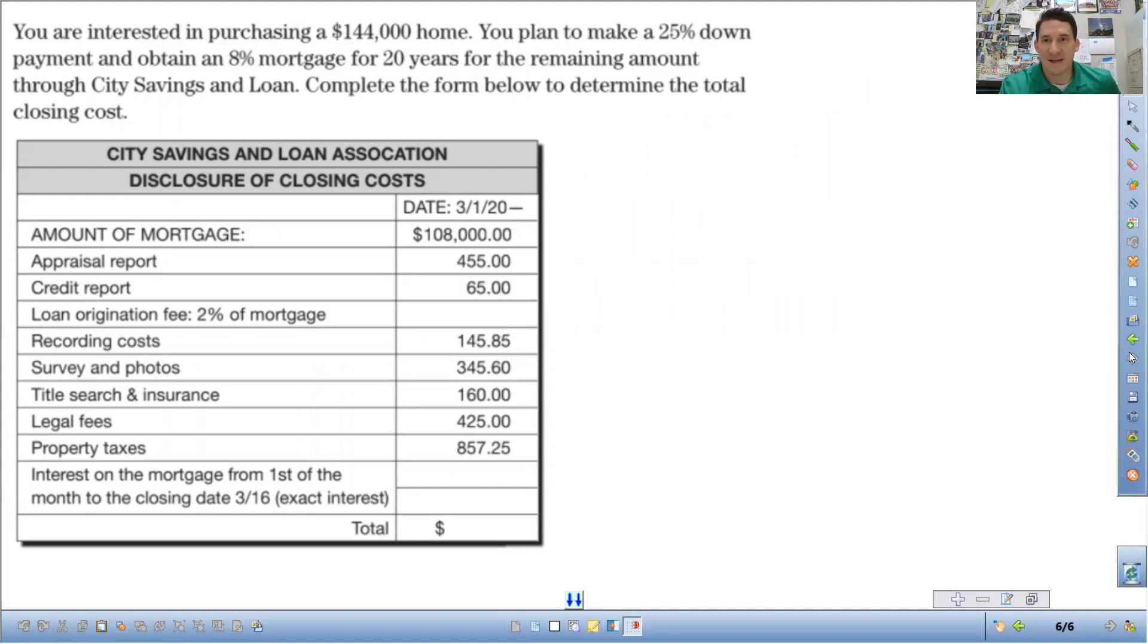You plan to make a 25% down payment and obtain an 8% mortgage for 20 years. By the way, 8% is a terrible mortgage rate. Do not take out a mortgage for 8%. Awful. For the remaining amount through city savings and loans, complete the form below to determine the total closing costs.